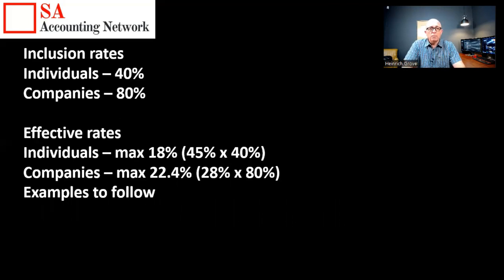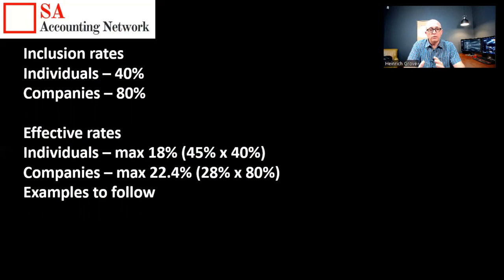Now the inclusion rates: for individuals, only 40% of the capital gain is included in your taxable income, so if you make a million rand profit, only 400,000 rand gets added to your taxable income. For companies, that inclusion rate is 80%. The effective rates are important — with a 40% inclusion rate and a maximum tax rate of 45%, your maximum effective capital gains tax rate for individuals is 18%. For companies, with 80% inclusion and 28% corporate tax, the maximum effective rate is 22.4%.